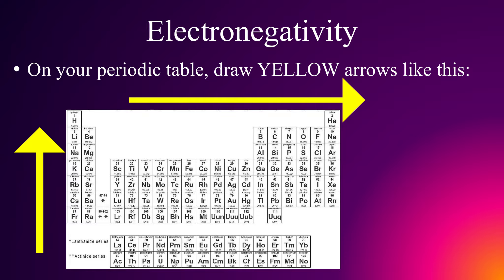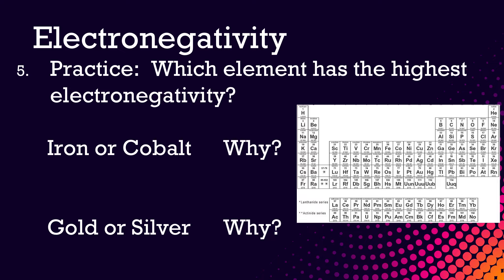On your own periodic table, draw your electronegativity trends in yellow — increasing from left to right, and increasing up a group or family. Now it's your turn to practice.